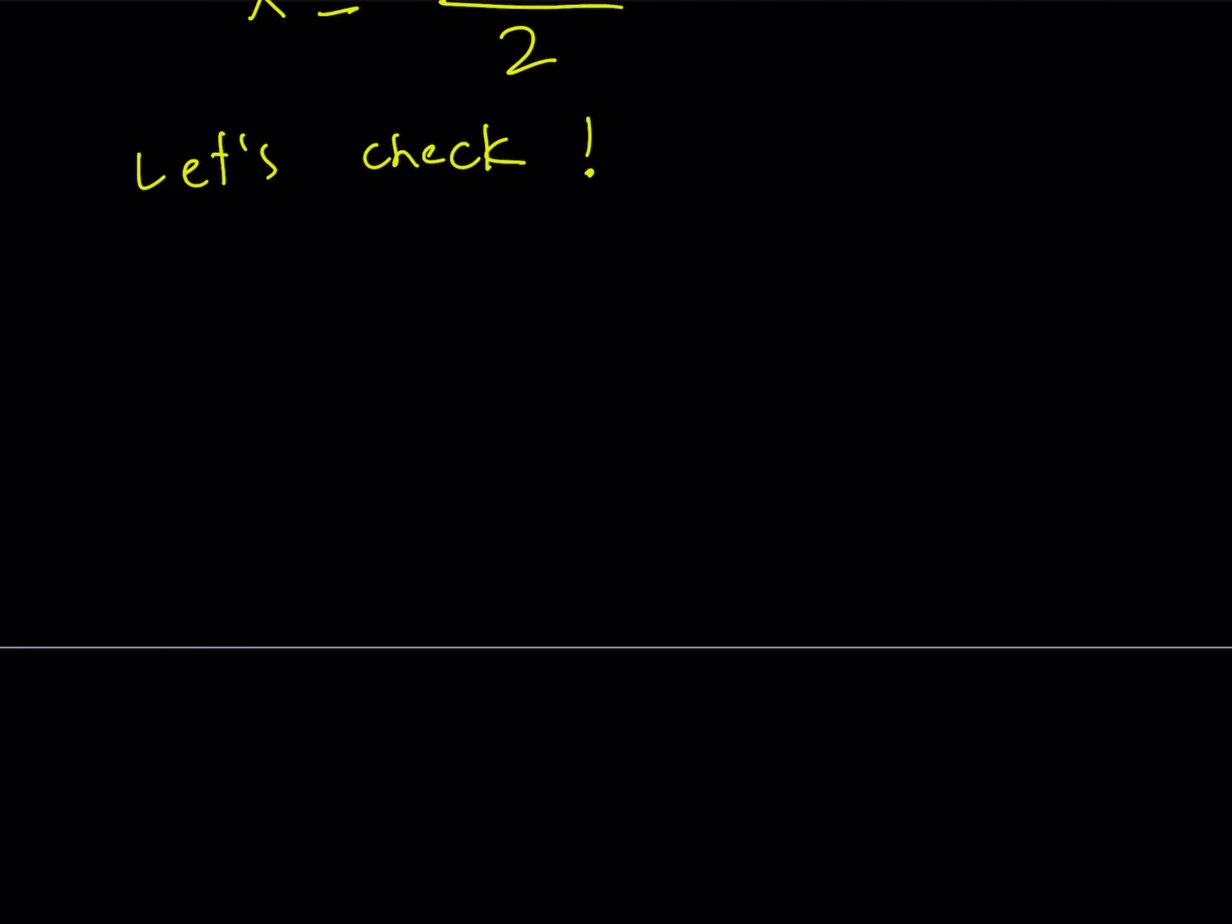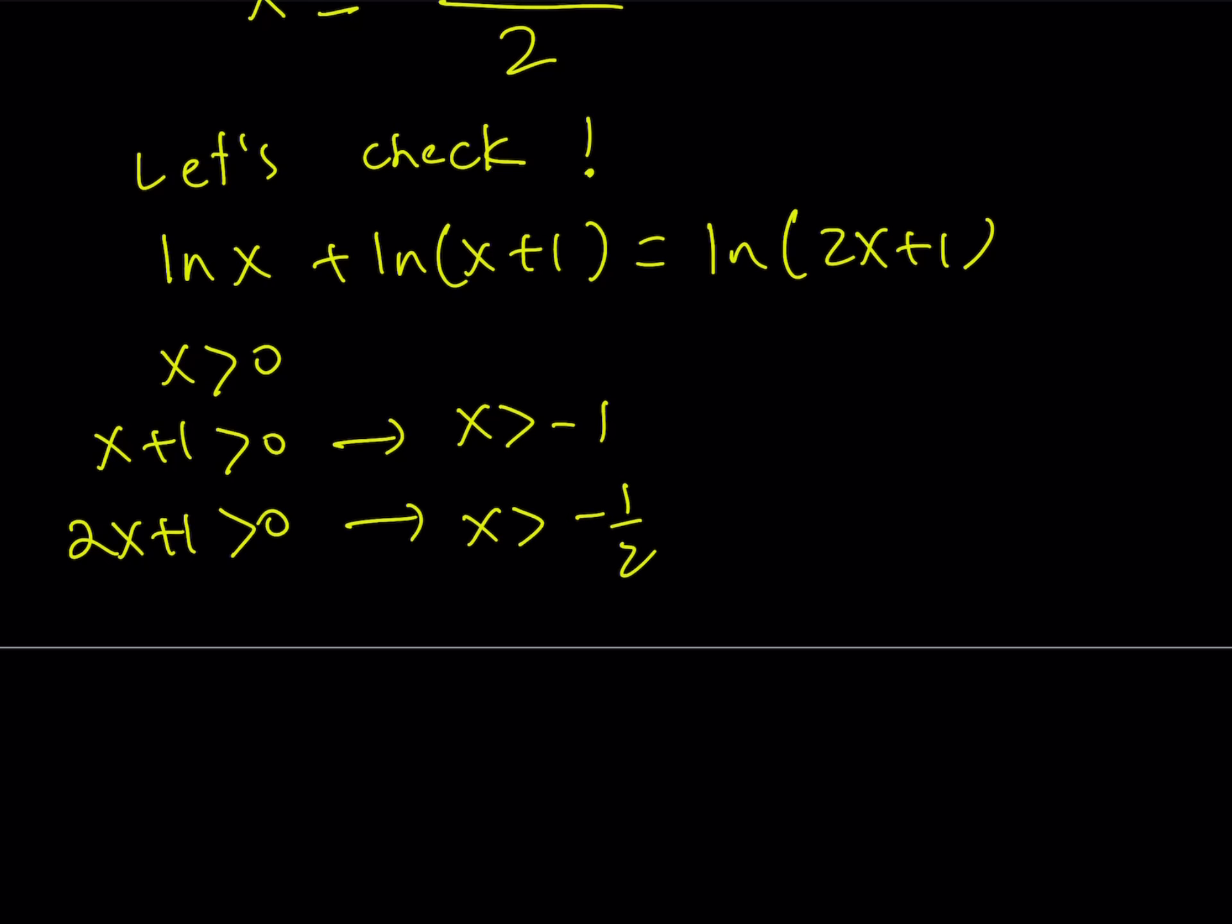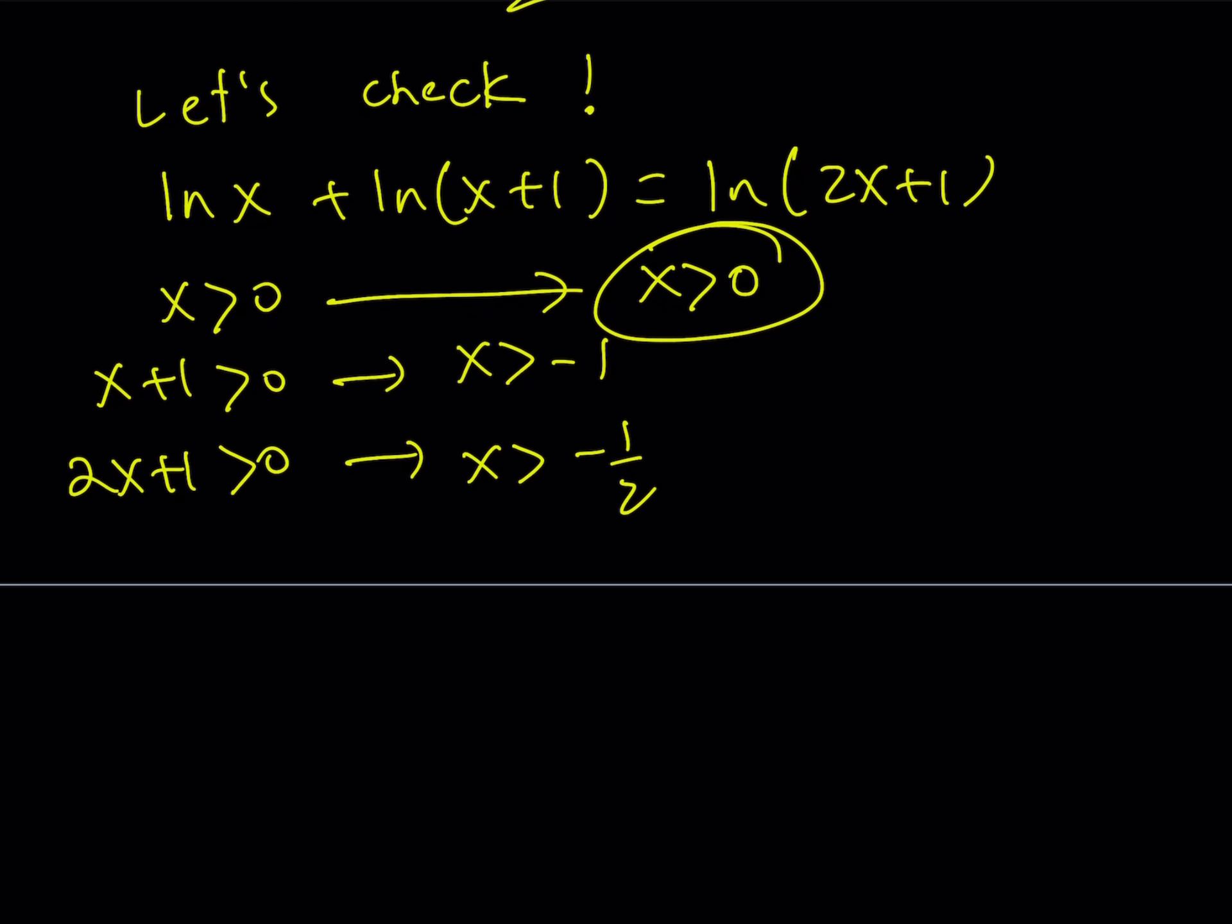So we do have the following equation: ln x plus ln x plus 1 equals ln 2x plus 1. I know that x must be positive, x plus 1 must be positive, and 2x plus 1 must be positive. So in other words, in order for this equation to have real solutions, all of these conditions must be met. But notice that this implies x is greater than negative 1. This implies x is greater than negative 1 half. But x is greater than 0 is basically going to cover everything, right? Because we're looking at the intersection. So we want the x values to be positive.